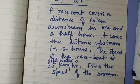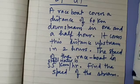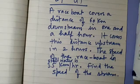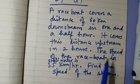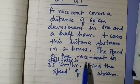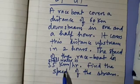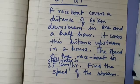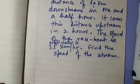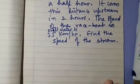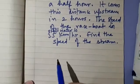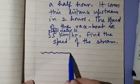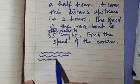A race boat covers a distance of 60 kilometers downstream in one and a half hours. It covers this distance upstream in two hours. The speed of the race boat in still water is 35 kilometers per hour. Find the speed of the stream. It is such an interesting question, so let us first visualize this.